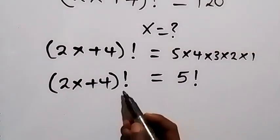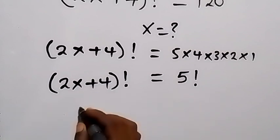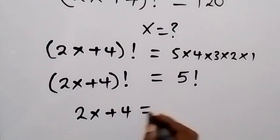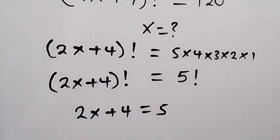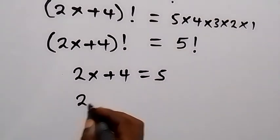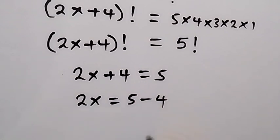We have factorial on this side, factorial on this side, so we can drop the factorial and equate the numbers. So we have 2x+4 equals to 5. When we solve for x, taking 4 to this side, we have 2x equals to 5 minus 4, and we have 2x equals to 1.